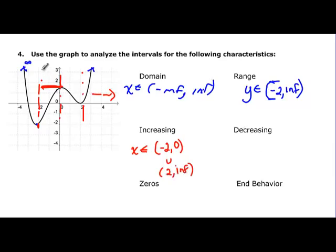And decreasing would be the first part of my graph, so it's infinity up to this point. So let's write that. x is an element of negative infinity to negative 2, and then union, and then it also decreases right here. And that goes from 0 over to 2.